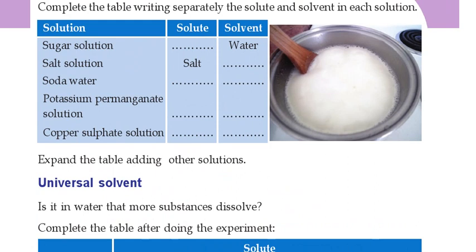Then potassium permanganate solution. Potassium permanganate is a dark pink colored powder. Potassium permanganate solution means we want to make that solution by putting it in water. The solute is potassium permanganate — that spelling is there itself, so while you are writing, don't make a mistake. Then which one is the solvent? Water is the solvent.